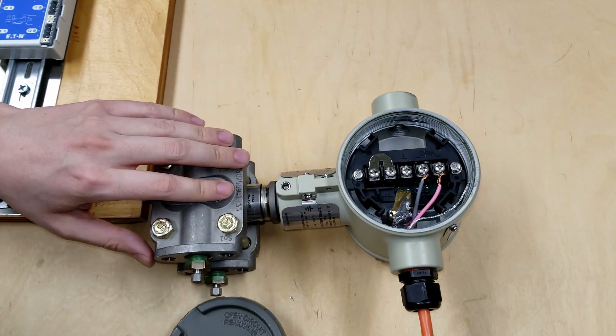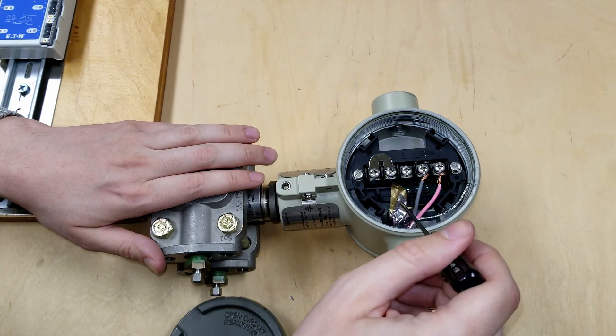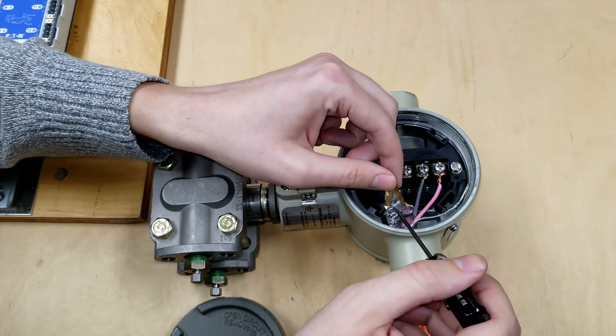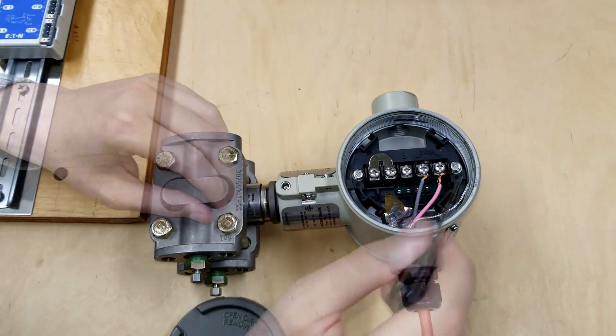One area that's often overlooked is the inside of the instrument case. Here you can see that the shield drain wire is touching the outside of the case, causing an intermittent ground. The same could happen with the foil.